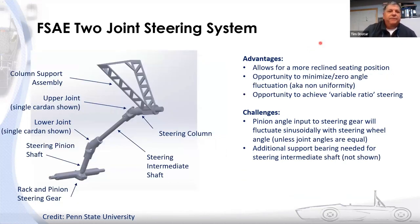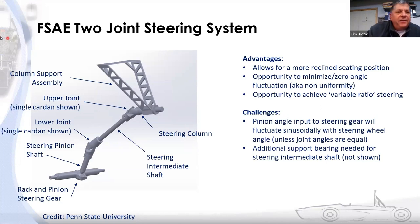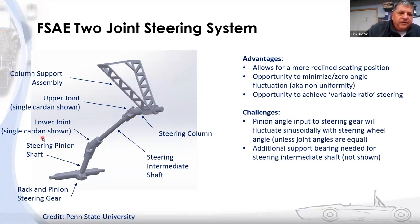The last configuration is the two-joint steering system. We have a column support assembly — some bracketry and bearings supporting the steering column — then an upper joint and a lower joint, each a single cardan joint. The upper joint connects the shaft to the steering column; the lower joint attaches the shaft to the steering gear pinion. This combination of upper cardan joint, shaft, and lower cardan joint is what we call the steering intermediate shaft.